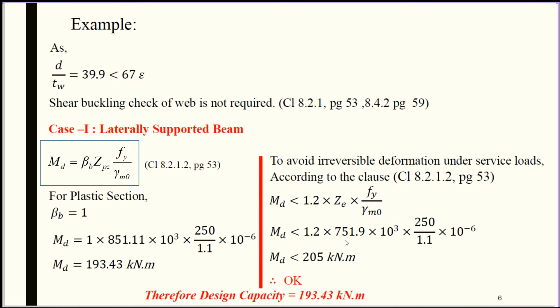As D/TW is 39.9, which is less than 67 epsilon, shear buckling check of the web is not required. We can directly calculate strength of the laterally supported beam using the standard formula in Clause 8.2.1.2, page 53: MD = beta B × ZPZ × FY / gamma M0. For plastic section, beta B = 1.